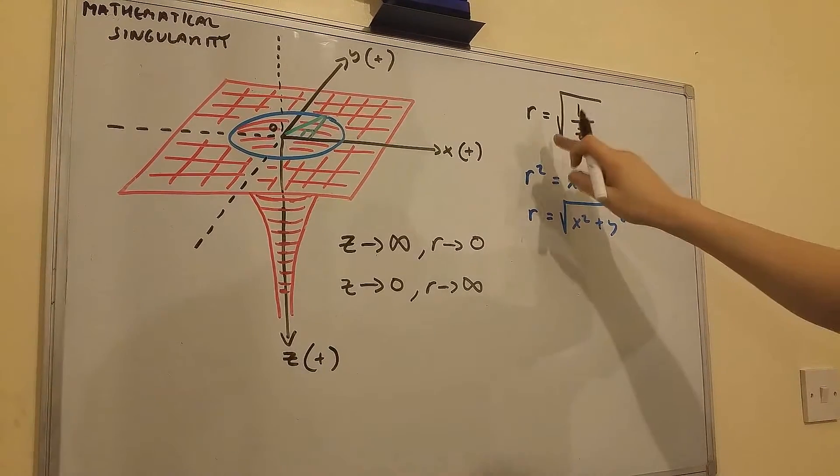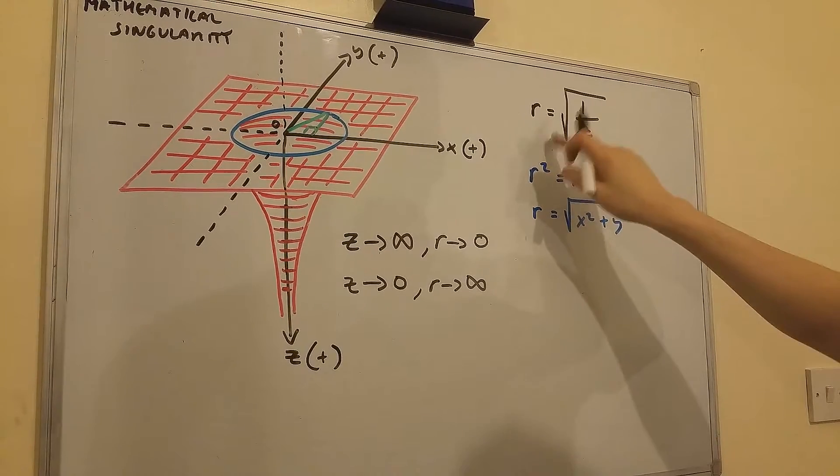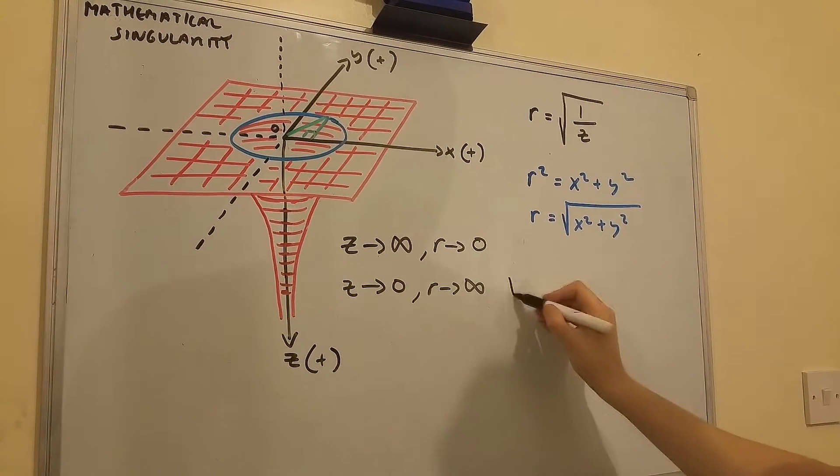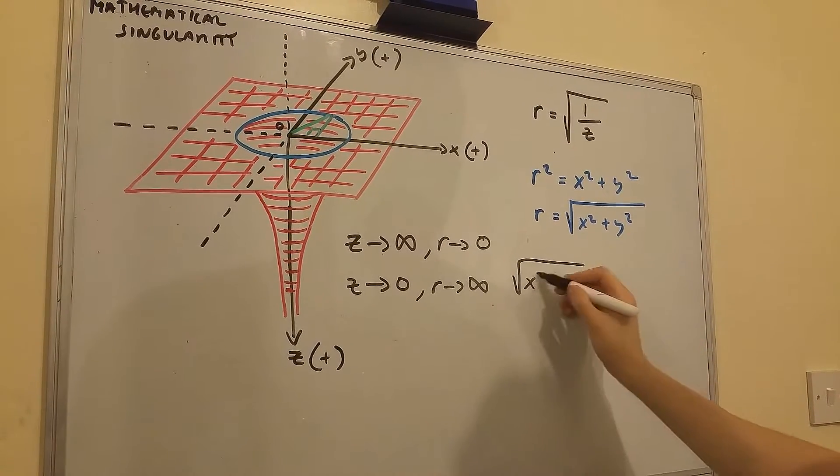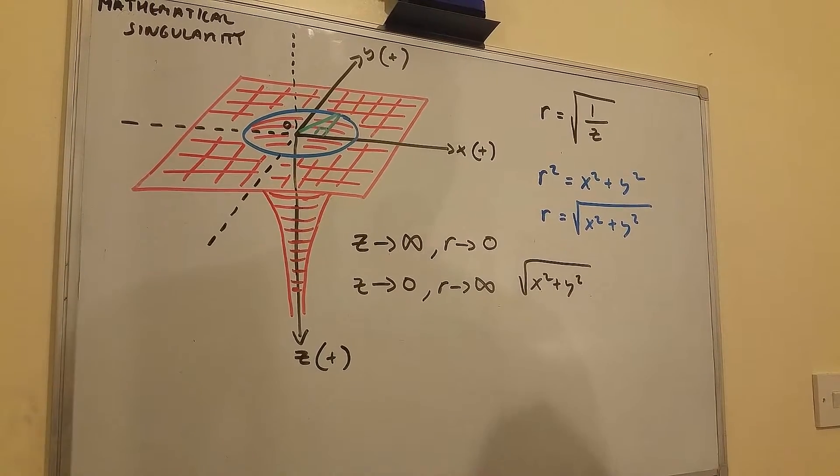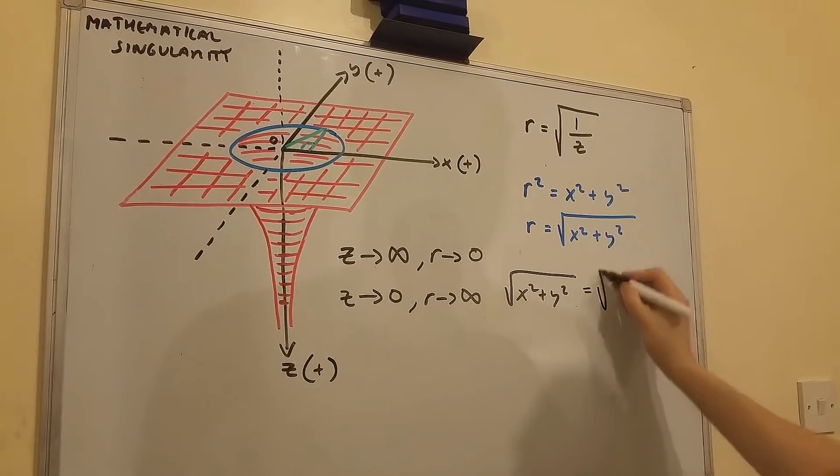So this formula right here transforms into the square root of x squared plus y squared equals the square root of 1 over z.